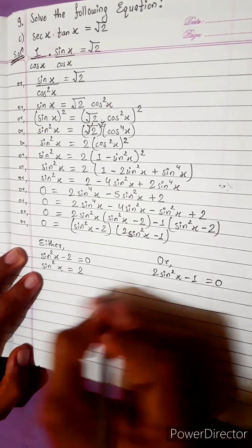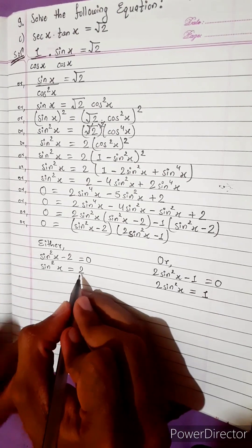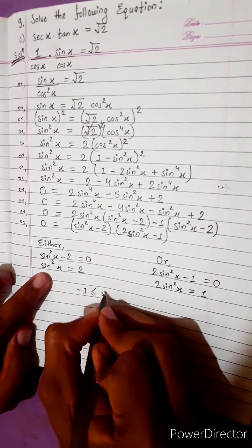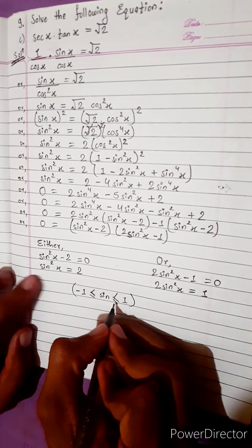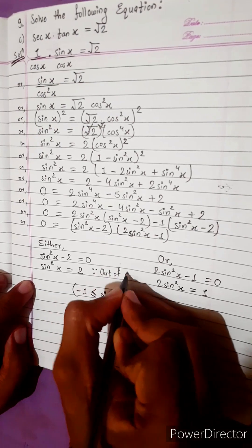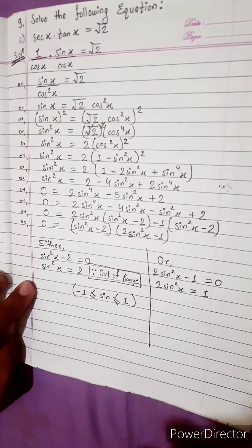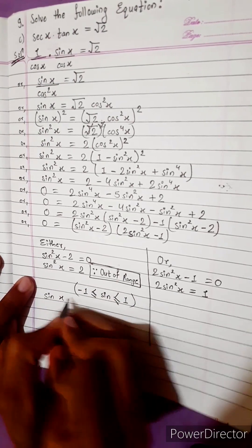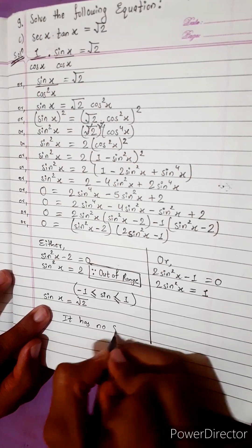Two sine squared x equals two, so sine squared x equals one — that gives sine x equals root 2, which is out of range. The range of sine is: minus one less than or equal to sine x less than or equal to one. So this value is out of range — it has no solution.